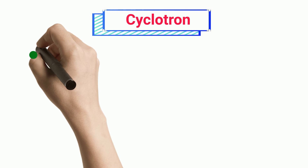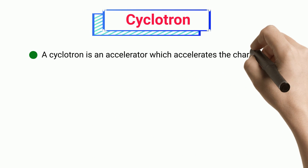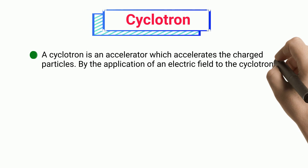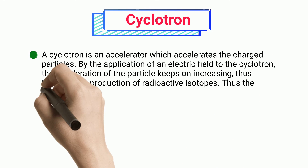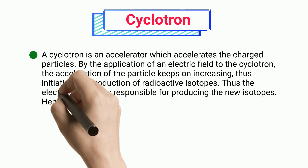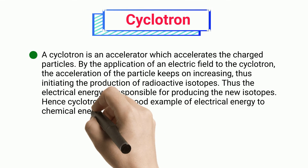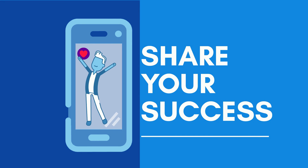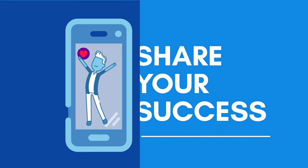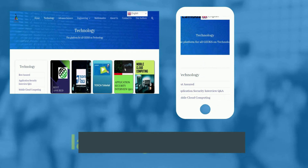Cyclotron. A cyclotron is an accelerator which accelerates charged particles. By the application of an electric field to the cyclotron, the acceleration of the particle keeps on increasing, thus initiating the production of radioactive isotopes. Thus electrical energy is responsible for producing new isotopes, and hence cyclotrons are a good example of electrical energy to chemical energy.